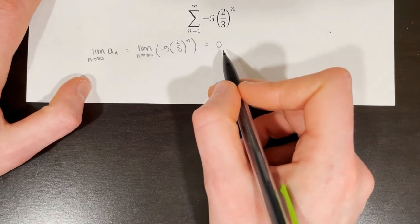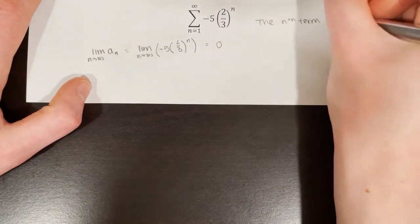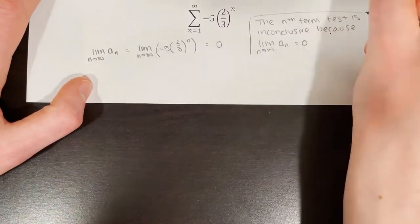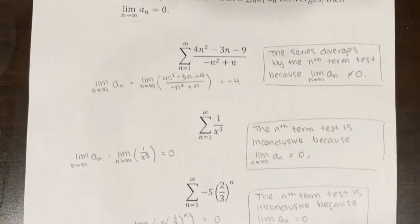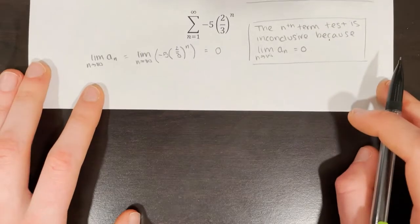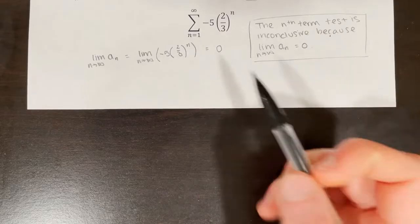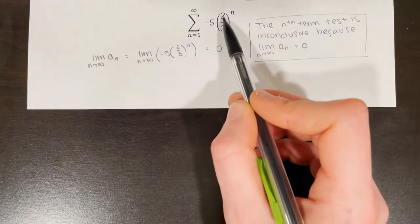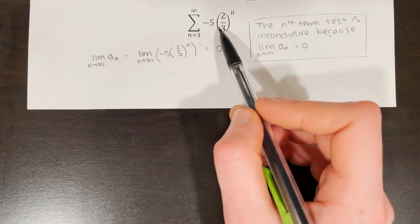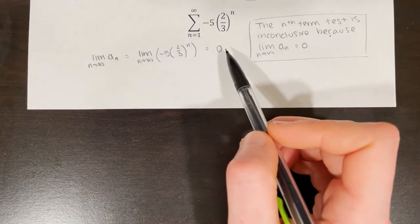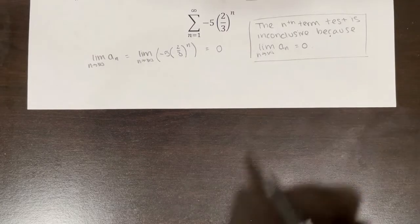Therefore, the nth term test is inconclusive because the limit as n approaches infinity of a sub n is equal to 0. If we were trying to determine convergence or divergence, we would move on to the geometric series test: since r equals 2 thirds and the absolute value of 2 thirds is less than 1, this series converges. But just using the nth term test, we can't conclude whether it converges or diverges.